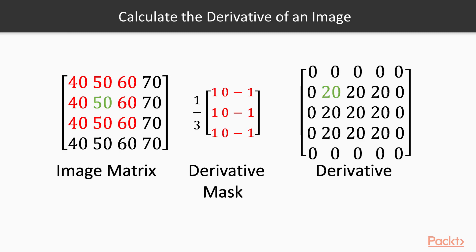In order to calculate the derivative at any point in the image, place the derivative mask on the image matrix with the centre of the mask at the point on which you want to calculate the derivative. Then, add the product of all the overlapping terms cell by cell. This will give you the derivative of the image at that point.